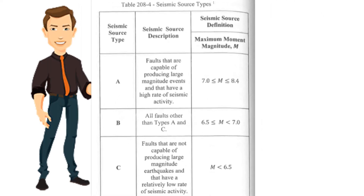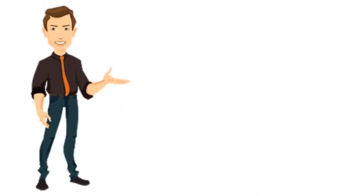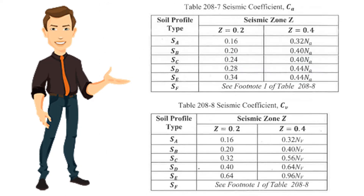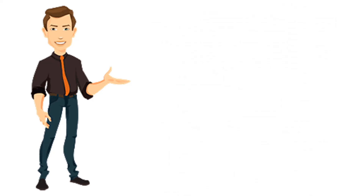The seismic coefficients CA and CV can be found in Table 208-7. They depend on the soil profile type and the seismic zone of the structure's location. If the structure is in Zone 2, the near source factors NA and NV are not required.